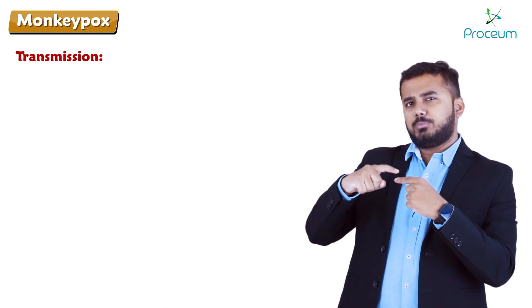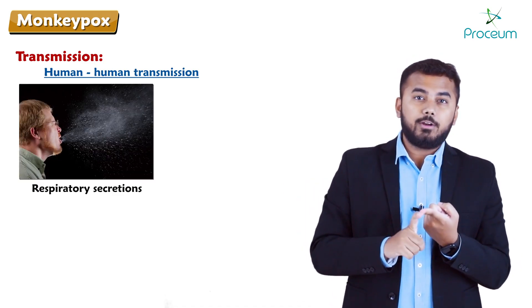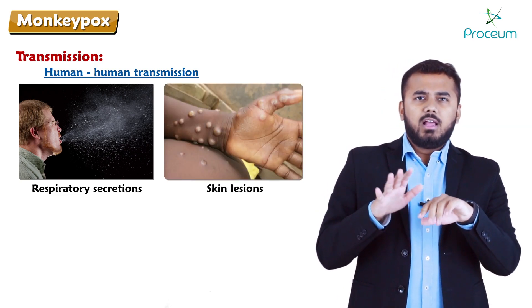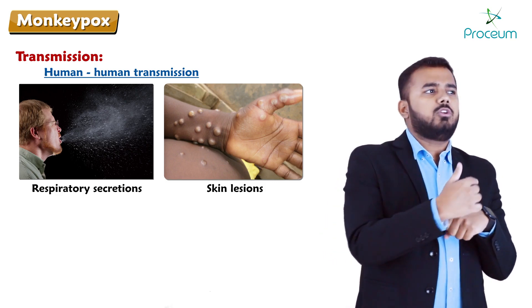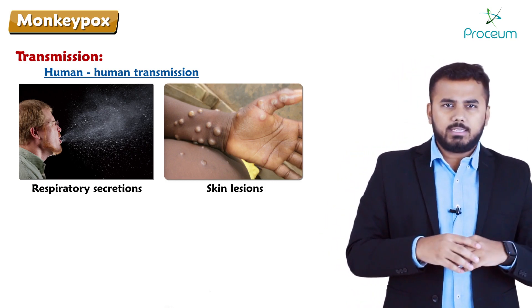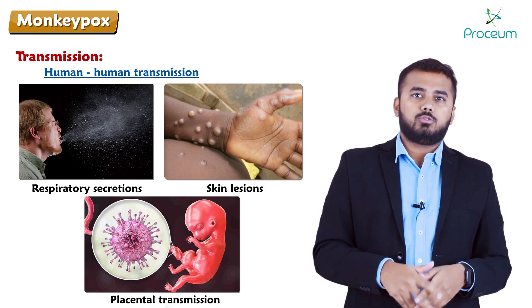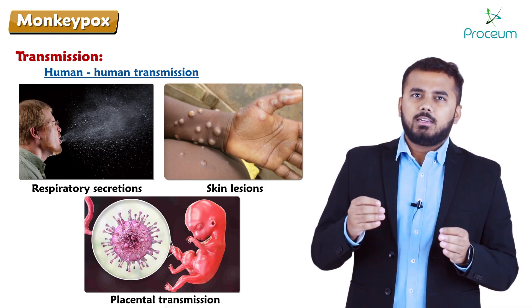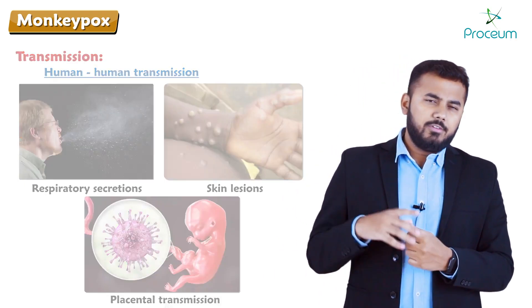An infected human can also transmit monkeypox to another human through respiratory droplets and respiratory secretions, and through contact with skin lesions — fluid from skin eruptions can infect another person. Placental transmission is also possible, which is called congenital monkeypox. Whether the virus is sexually transmitted remains unclear.